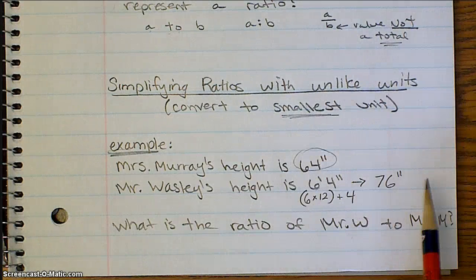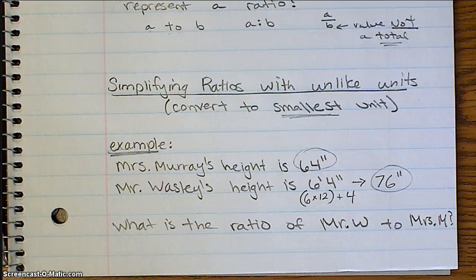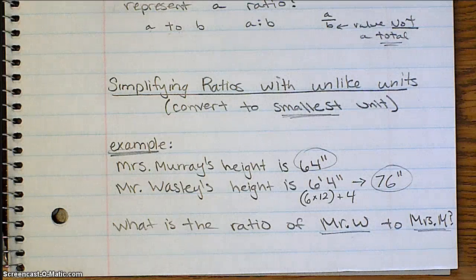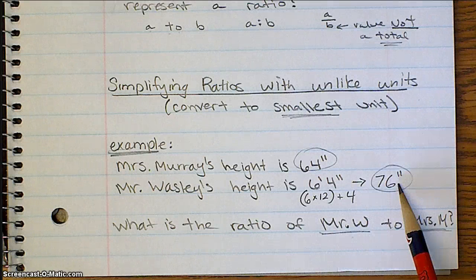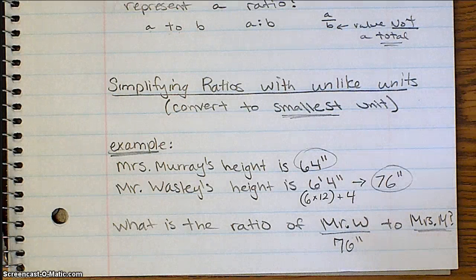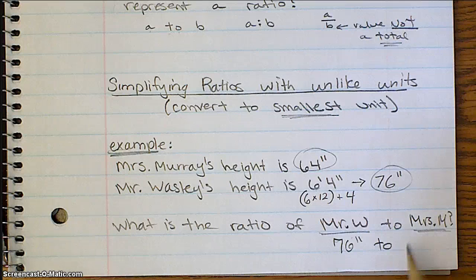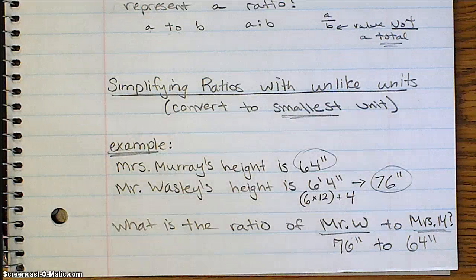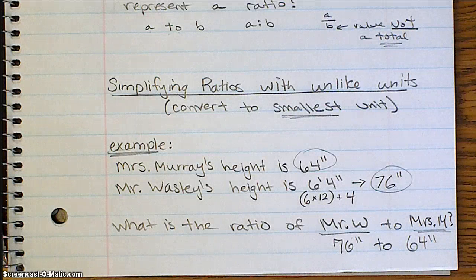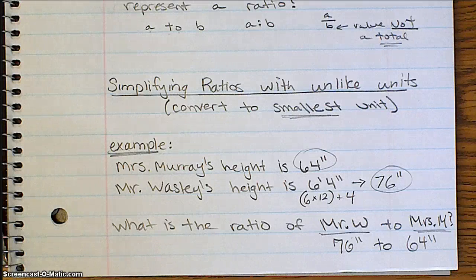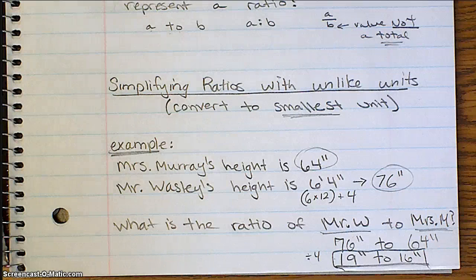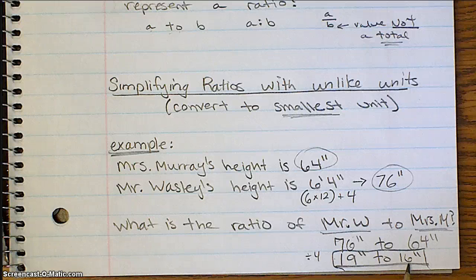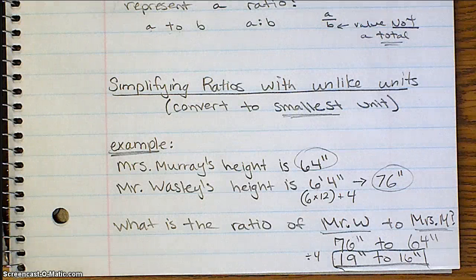Okay, now we have inches being compared to inches, so we can write a ratio that makes sense. So now it says, what is the ratio of Mr. Wosley's height compared to my height? So, 76 inches is going to have to go first, since that's Mr. Wosley's height, compared to 64 inches, because that's my height. Now, we can do the same thing we did up above, by simplifying that ratio, since both of those numbers are divisible by 4. Once you divide each part of the ratio, then your simplified ratio should read 19 inches to 16 inches. That is the comparison of Mr. Wosley's height to Mrs. Murray's height.